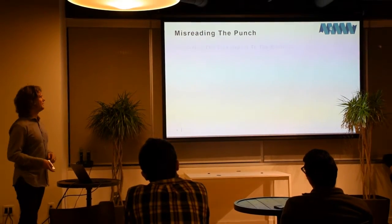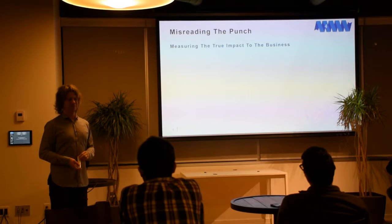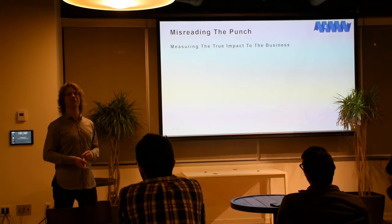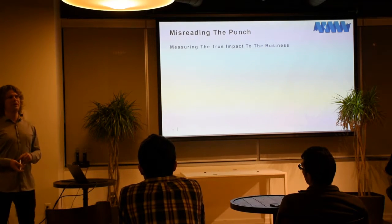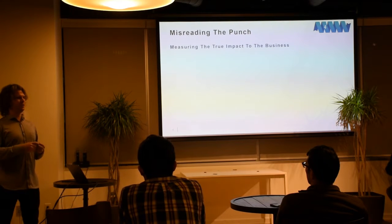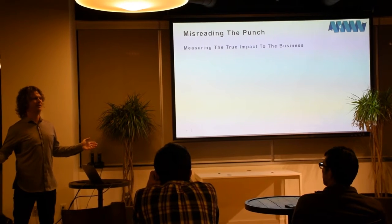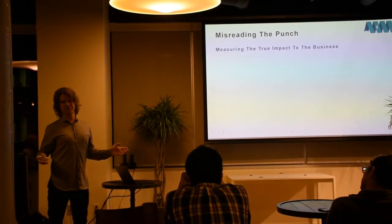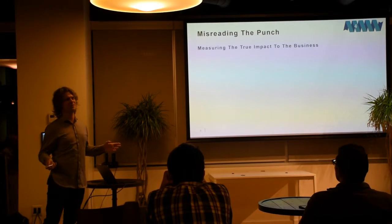The fourth P - measuring the impact to the business. Apache Struts is a great example of this. Executives will often come in and say 'how are we affected?' and the results of a scan will show 'Apache Struts vulnerability is exposed on this many different servers.' That doesn't actually measure the true impact to the business - it just measures the number of vulnerable systems you have.